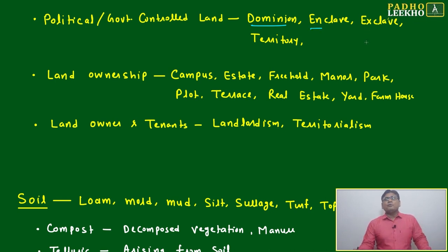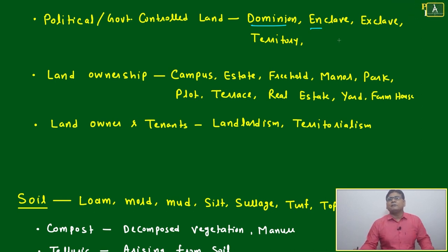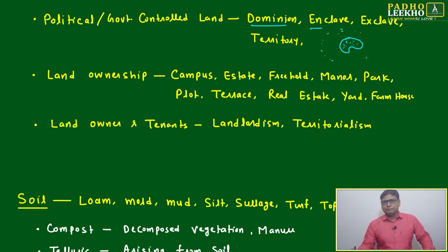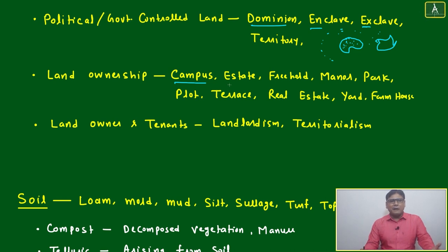Enclave and exclave have almost similar meanings but there is a difference. An enclave is when one nation or particular group has control over a certain land, and that land is completely surrounded by the same nation. An exclave is the opposite — you have certain land, but all surrounding areas belong to a different country. Then there is territory and land ownership.